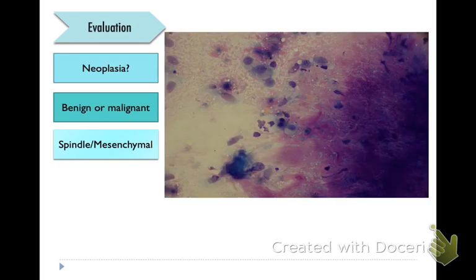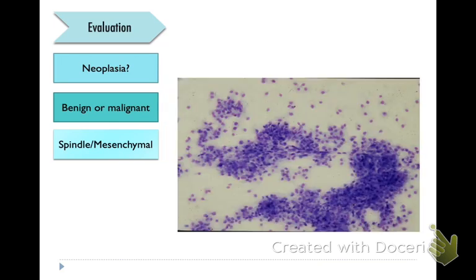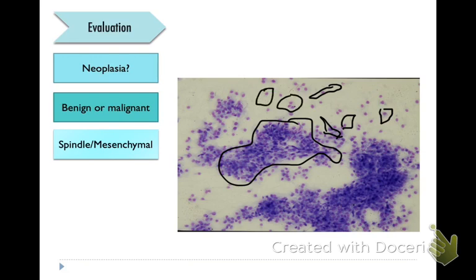And then we can have spindle and mesenchymal populations. Here we see a bunch of spindle-shaped cells with a bunch of matrix — this pink, stippled, proteinaceous extracellular matrix background. Here's another example of a spindle cell population; they're aggregated together but they don't actually have cell-cell junctions, and you can see they're often wispy in shape. Sometimes they make these islands but they also have 'swimmers off the coast' — that's how I like to describe spindle cells as opposed to epithelial cells that are often just islands without any swimmers off the coast.